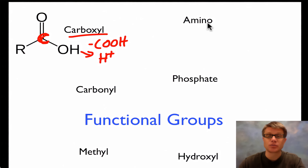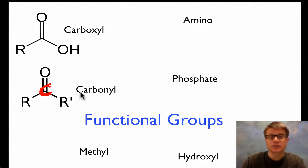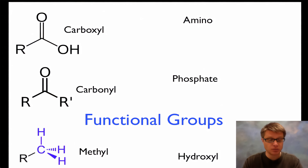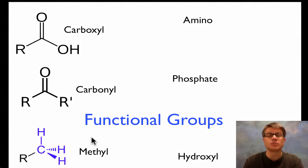The carboxyl group and the amino group actually form amino acids. Next would be the carbonyl group — it has a carbon; if it's in the middle we call it a ketone, at the end it's called an aldehyde, so formaldehyde would be an example. Then the methyl group is a carbon with three hydrogens around the outside. Methyl groups are important in methylation — they can methylate big carbon compounds and make them non-functional, DNA being a great example.